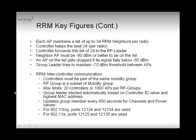All controllers gather information from their access points and report to the RF group leader. Every 10 minutes — every 600 seconds — the group leader computes the RRM information and sends instructions back to the other controllers, such as 'AP3 should change channel from 6 to 11' or 'AP5 should change power level from 2 to 3.' To exchange this RRM information, controllers use UDP ports 12124 and 12134 for B/G, and 12125 and 12135 for A. These ports must be open in your firewall between controllers.